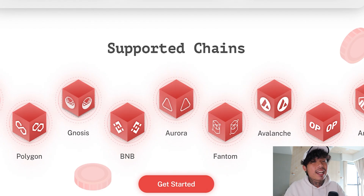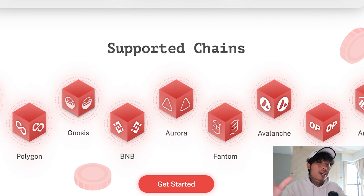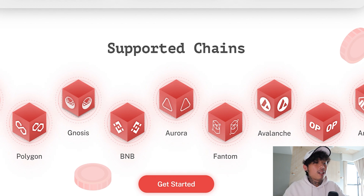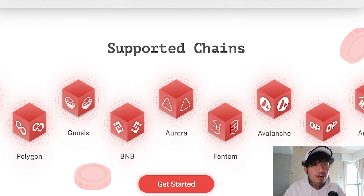These are the supported chains they have right now. Ethereum is on it, which is a very big point because Ethereum has the most expensive gas fees out there. You've also got Polygon, BNB, Aurora, Phantom, Avalanche, Optimism, and even Arbitrum.